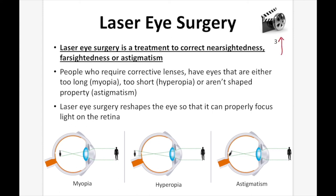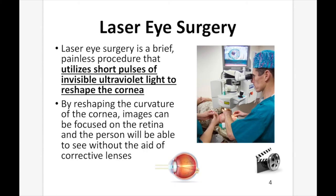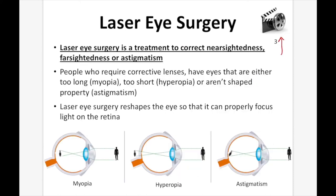Laser eye surgery is a brief, painless procedure that uses short pulses of invisible ultraviolet light to reshape the cornea. By reshaping the curvature of the cornea, images can be better focused on the retina without the need for corrective lenses. For myopia, surgeons flatten the cornea slightly so rays aren't converged as quickly at the start. Since convergence happens at both the lens and cornea, flattening the cornea produces more parallel rays hitting the lens, which then focuses light properly on the retina.